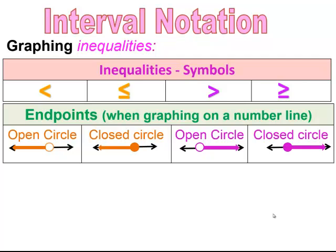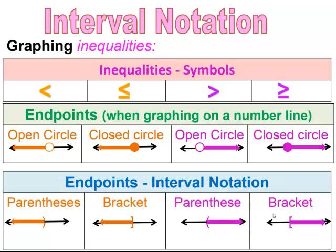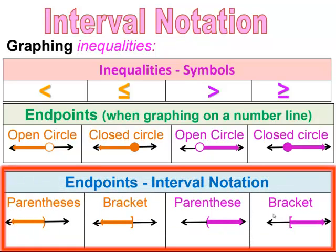Similar for the greater than and greater than or equal to: a greater than would have an open circle and you would shade to the right, indicating it's increasingly getting larger. If it's greater than or equal to, you would have a closed circle shaded to the right, to indicate that it also includes the number. Another way we're going to see the graphing of inequalities is in interval notation, which uses parentheses and brackets to graph our inequality.